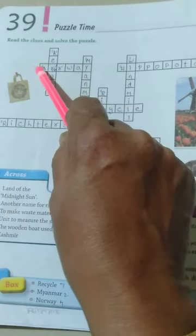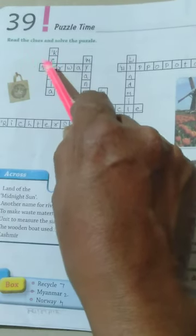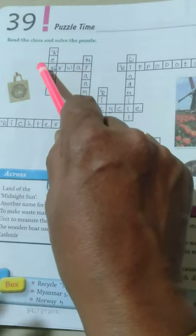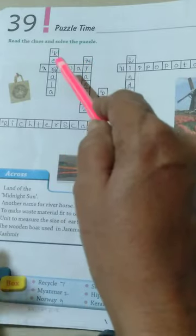Kerala ka R rahega, lekin Norway ke liye O bhi rahega. N-O-R-W-A-Y, Norway. And Kerala ke liye K-E-R-A-L-A, like this way. Some mistake hai in the questions.